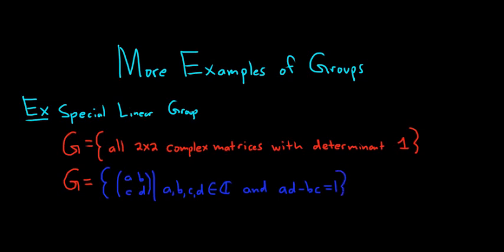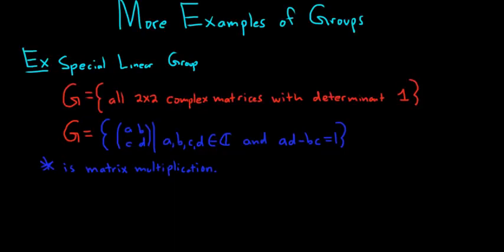Our binary operation, star, is going to be regular matrix multiplication. Note that matrix multiplication is not necessarily commutative — it's not always commutative. So this will be our first example of a group that's not commutative. Commutative groups are called abelian groups, so this is actually an example of a non-abelian group.